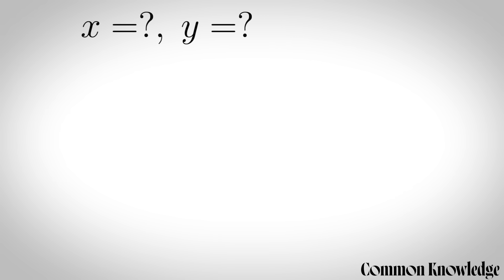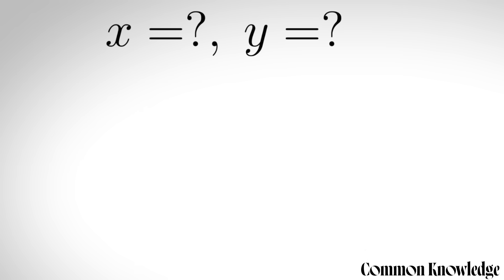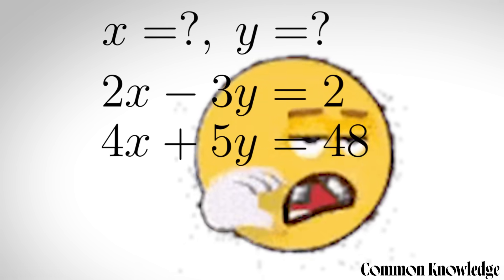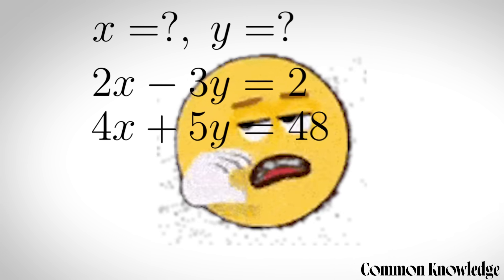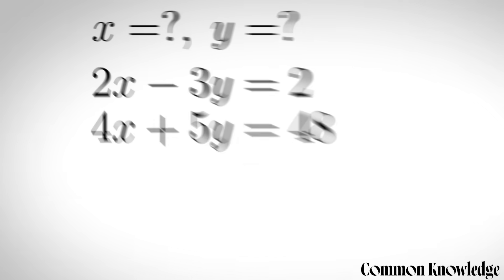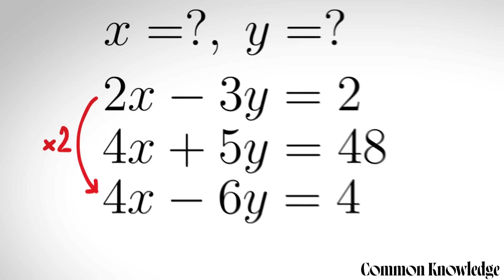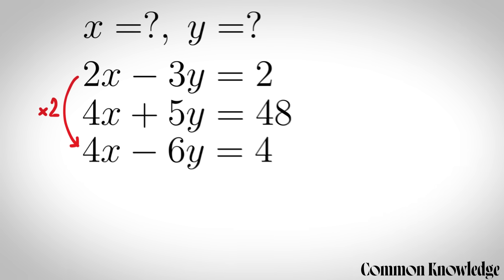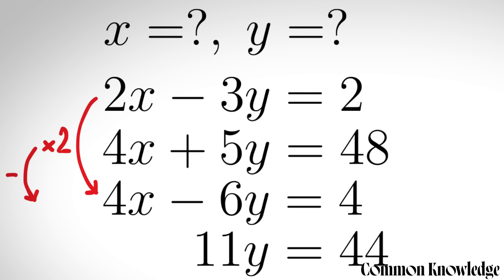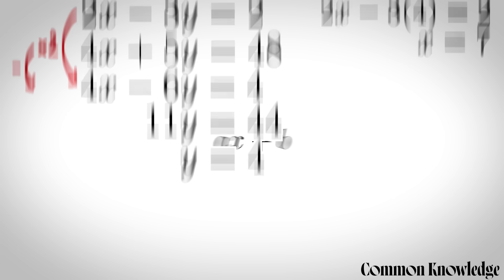Systems of linear equations: if you've got two unknown variables instead of just one then you need two equations to solve it. You look at the coefficients of one equation which match the coefficients of the other equation, or match with a multiple. In this case we multiply the entire equation by two, so we have a matching coefficient and can subtract the second equation from the first to get a single variable equation, solve for one variable, then substitute to get the other.